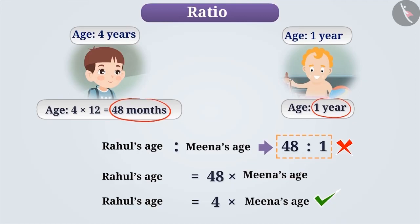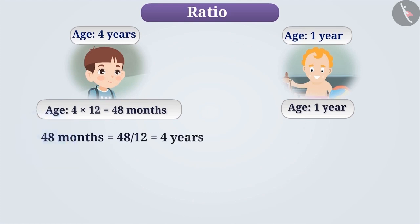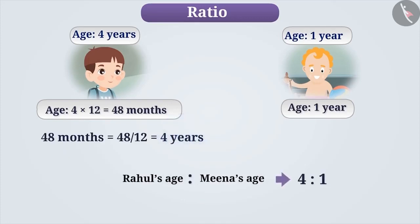Otherwise, it will result in an incorrect ratio. To convert the quantities into the same units, we can divide 48 months by 12 and convert it into years. Here, 48 months is equal to 4 years. Thus, we can write the ratio of ages as 4 is to 1.